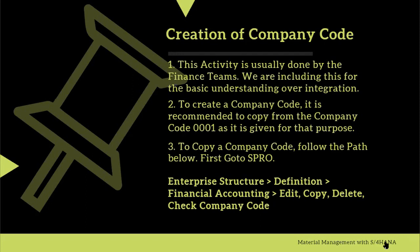Usually during company code creation it is recommended to copy the company code instead of creating from scratch. In order to copy a company code, SAP has given a dedicated company code from where you can copy to create a new company code, which is triple zero one (0001). We copy a company code because there is a lot of configuration already done on it, and instead of creating everything again we copy from that primary company code and edit the newly created one according to our requirements.